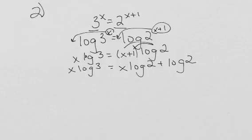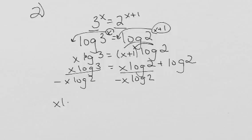Now I want to get my x's together. So I want to get these two terms on the same side of the equation. So I'm going to subtract an x log base 10 of 2 on each side. So I get x log base 10 of 3 minus x log base 10 of 2 equals log base 10 of 2.